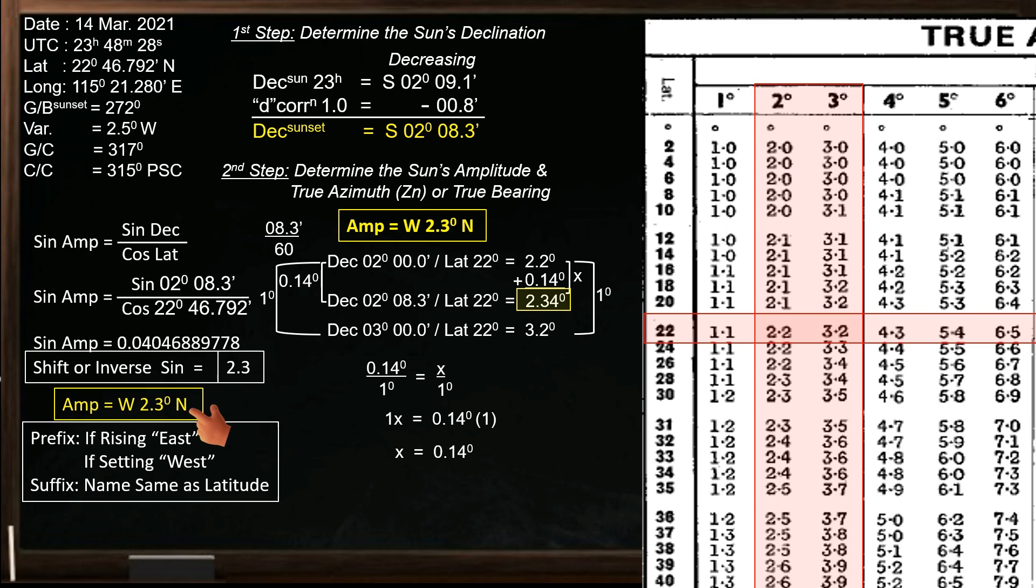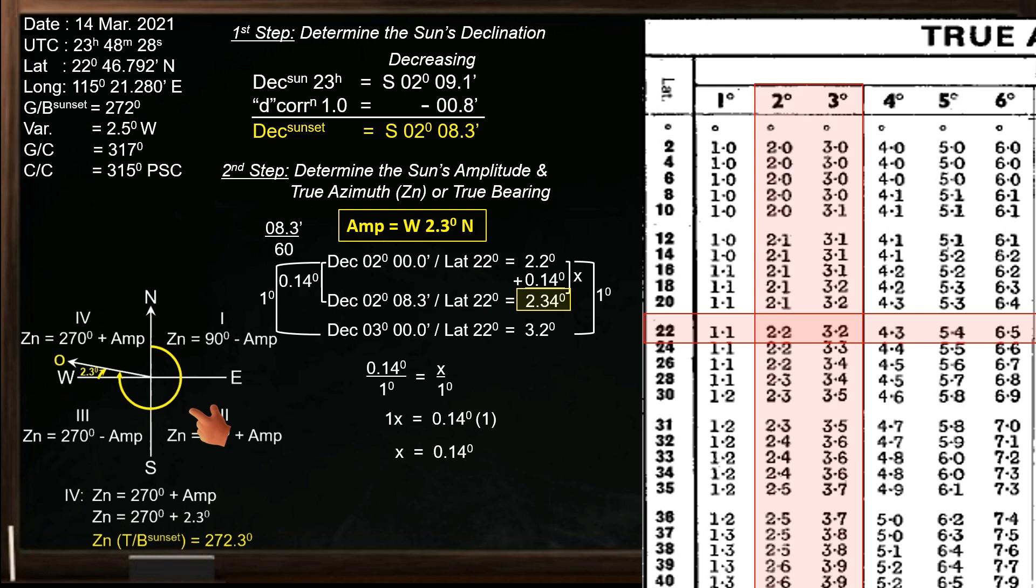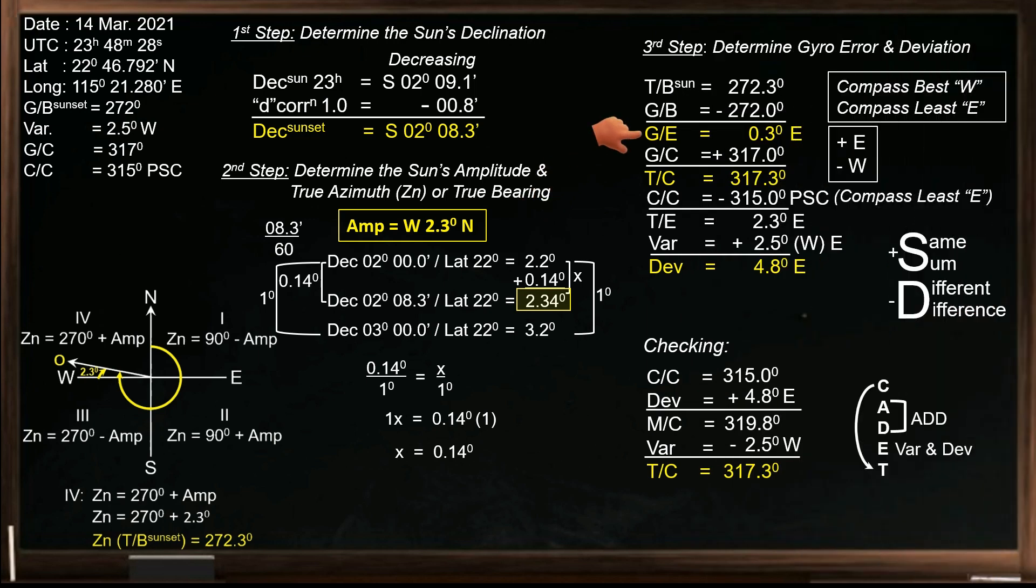In part 1 of this video, I have already discussed how to determine the true azimuth once we have the amplitude value. It also includes how to determine the gyro error and the deviation for the ship's heading. If you want to see the full details of part 1 of this video, kindly visit the link in the description or in the comments section below. That's all for now, I hope you found this video helpful. See you in my next video, thank you for watching, bye.